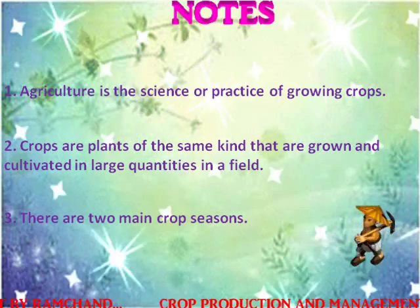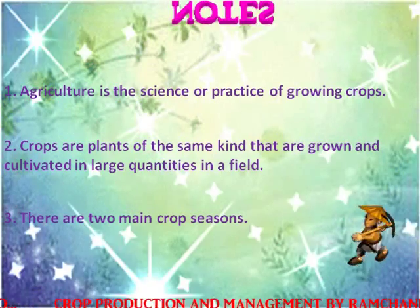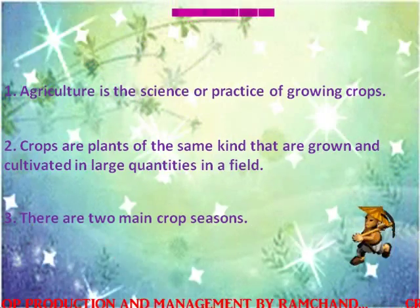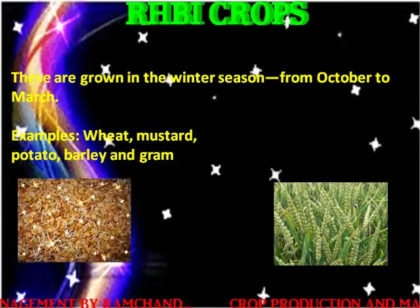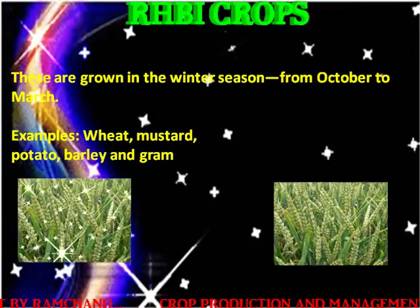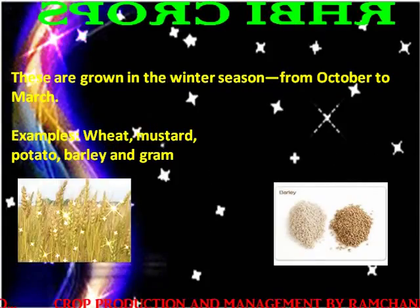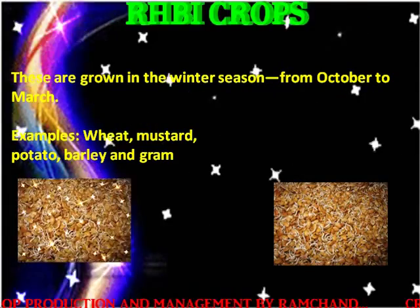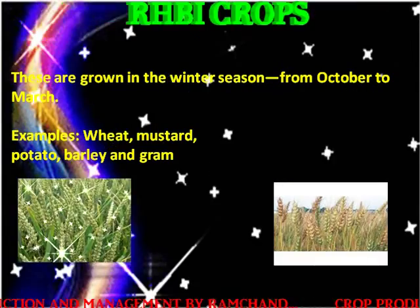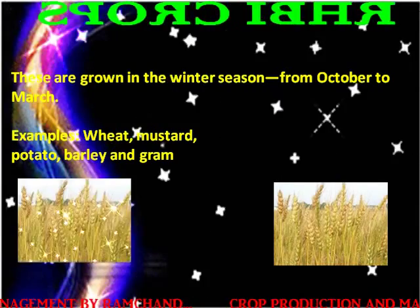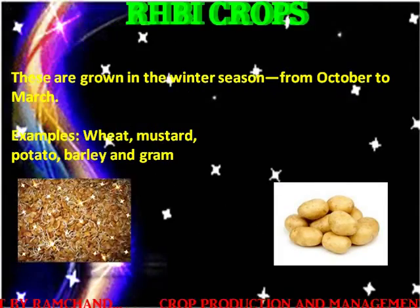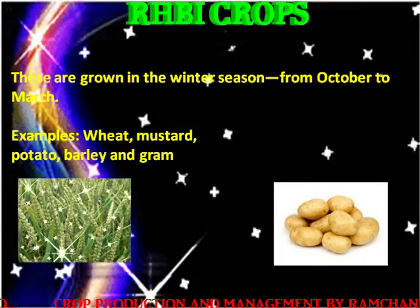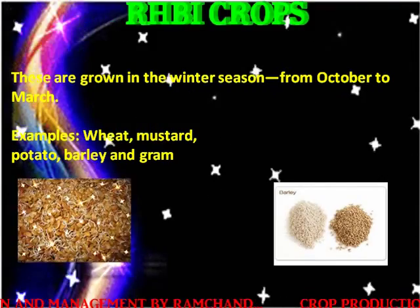There are two main crop seasons. Rabi Crops: these are grown in the winter season from October to March. Examples: wheat, mustard, potato, barley and gram.